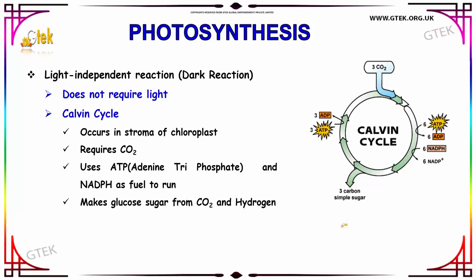Now we are going to see about the light-independent reaction — that is the dark reaction. In the dark reaction, it does not require light. This process is simply called the Calvin cycle. The Calvin cycle occurs in the stroma of the chloroplast; it requires carbon dioxide.